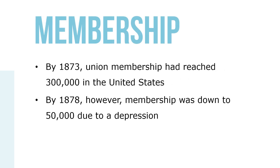By 1873, union membership had reached 300,000 in the United States. By 1878, however, membership was down to 50,000 due to the depression. Then in 1886, the American Federation of Labor — the AFL — was formed, and unionism began to increase once again.